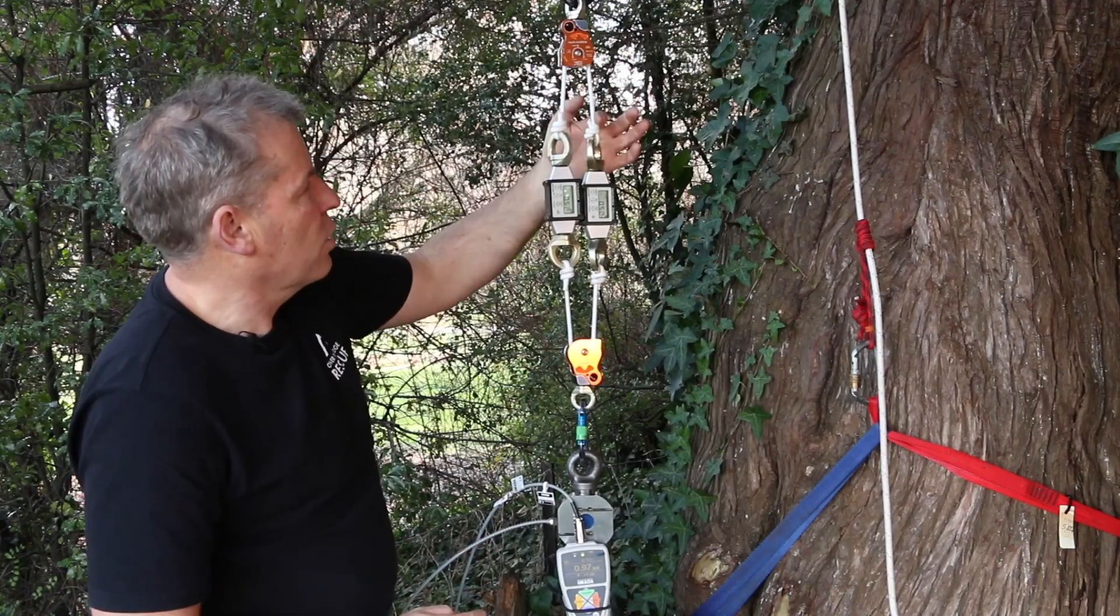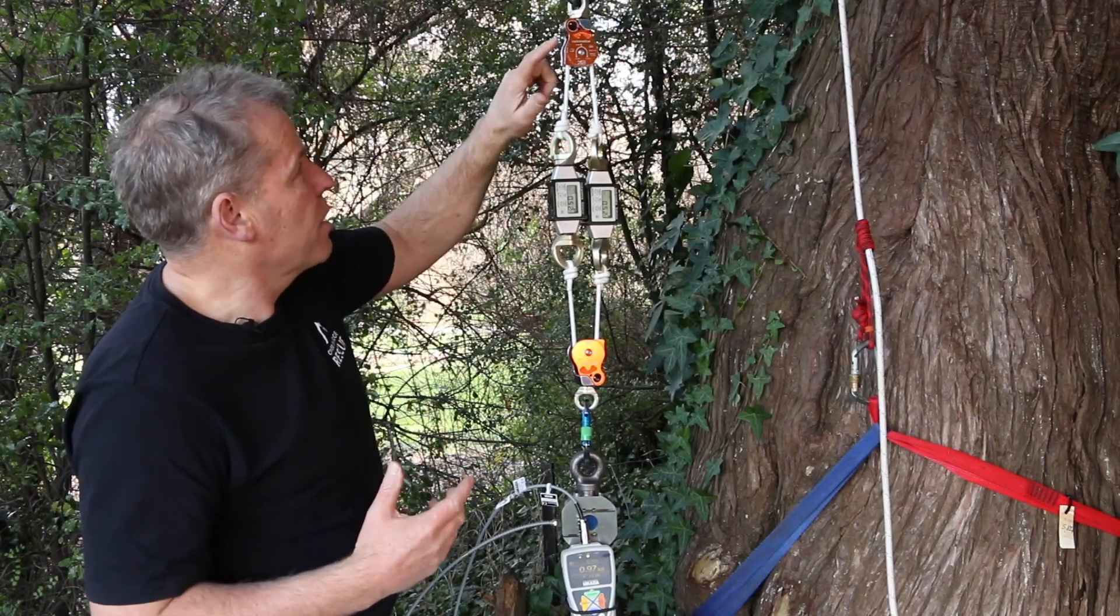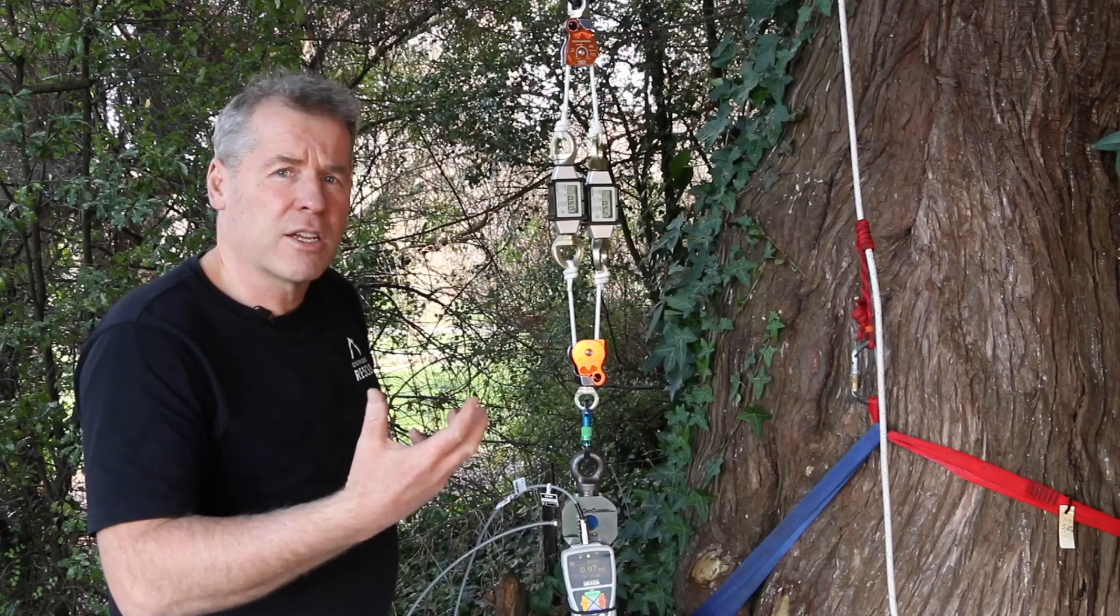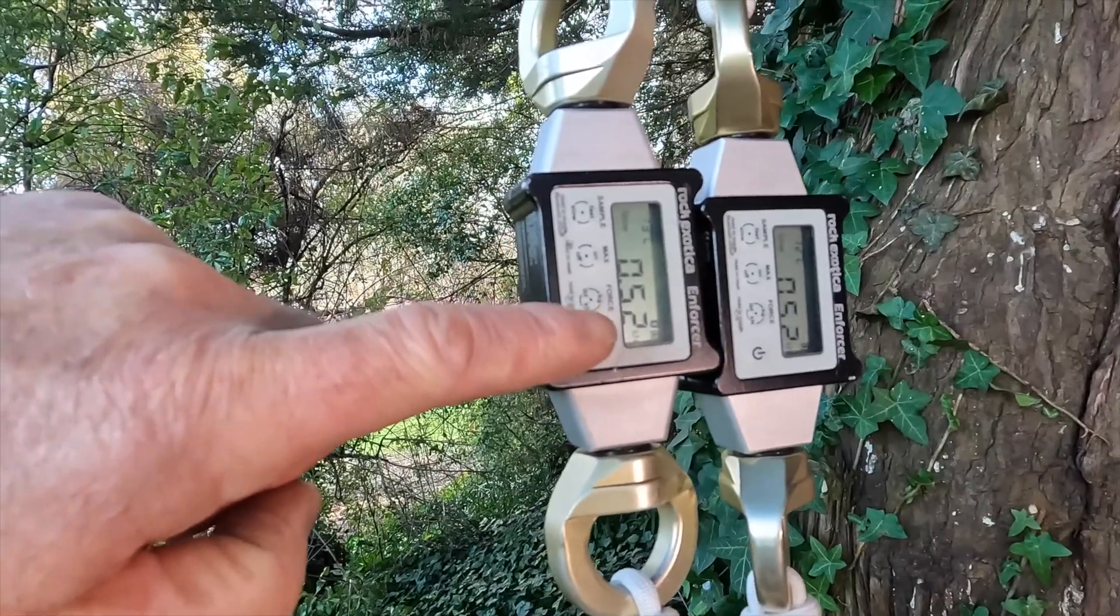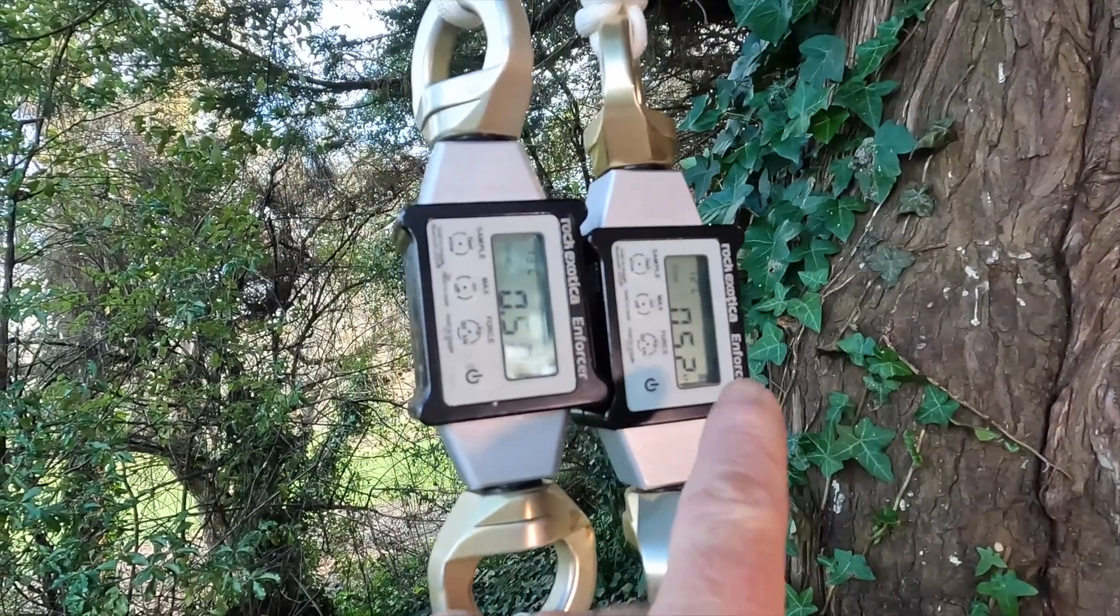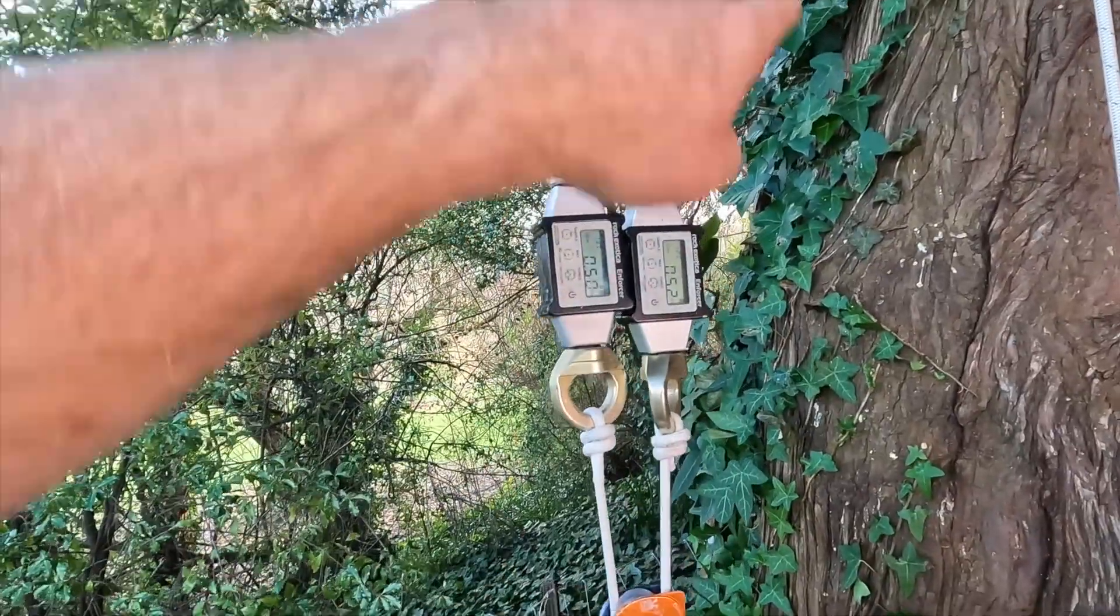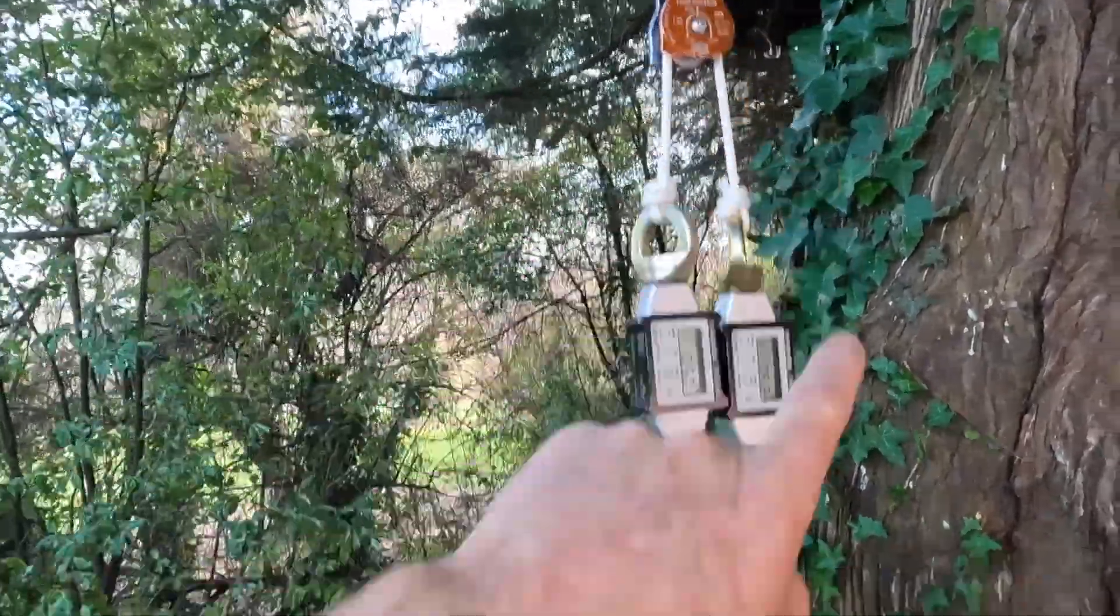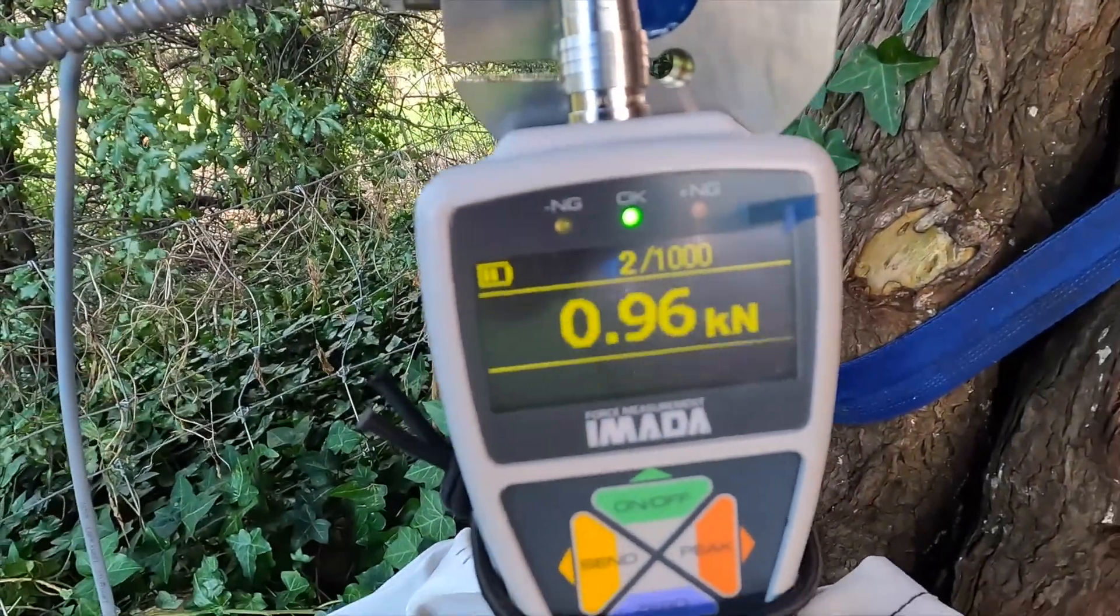We're using dyneema to reduce stretch and the pulley so we have as little friction as possible, just to demonstrate the tension in the system. If we look on the left-hand side, 0.52 on the left and 0.52 on the right. So as you can see, it's half the tension on this sling here all the way around compared to what's down here on the load.